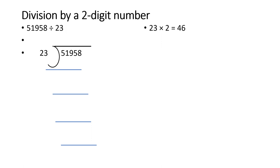We write 46, subtract from 51, getting 5, and bring down 9 to get 59. Again ask: how many 20s fit in 59? 2×20=40 and 3×20=60, which is greater than 59. So 23×2=46 again. We write 46, subtract from 59, getting 13, and bring down 5 to get 135.